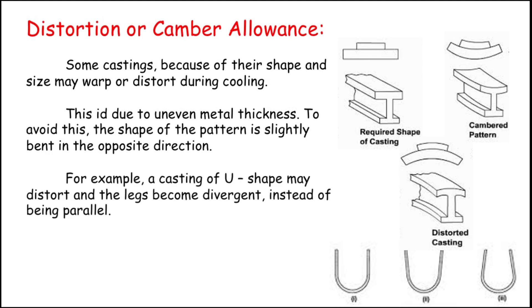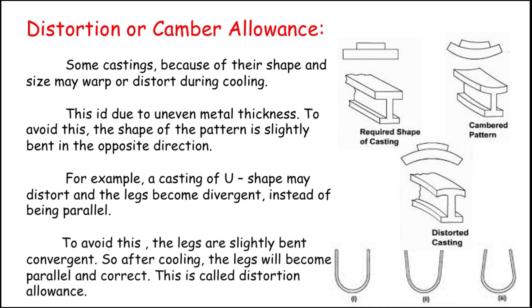For example, a U-section shape may be distorted and the legs may converge instead of remaining parallel. See friends — the U-shape is given in the first diagram. If we make the pattern in the same U-shape, the final casting we get, shown in the third diagram, will be bending towards the inside. We calculate how much it bends inward and make the pattern as in the second diagram, moving the legs to the opposite side. After casting, the final result will be as in the first diagram — a perfect U-shape with the legs in a parallel position. This is called distortion allowance or camber allowance.